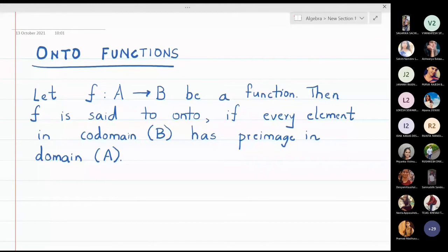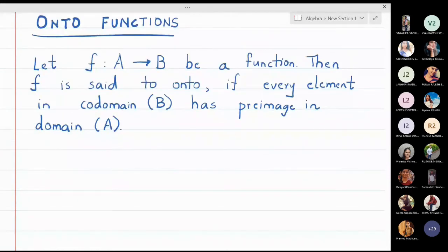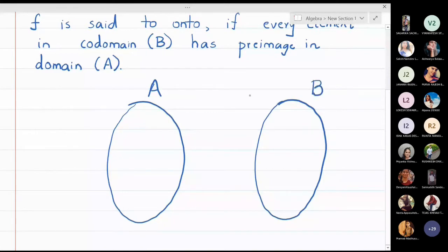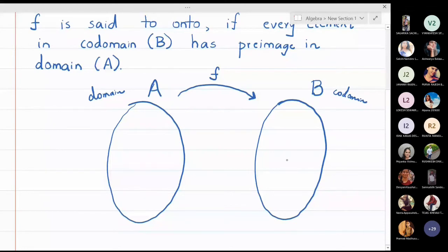Pictorially, if this is the domain A and this is the co-domain B, and f is a function from A to B — A is called the domain and B is called the co-domain — then if I take any element here, I'm going to call it beta. This beta is an element in the co-domain, and it must have a pre-image alpha in the domain set.